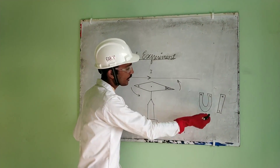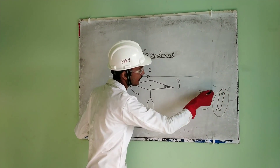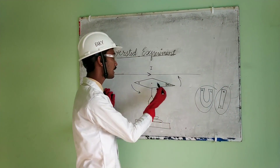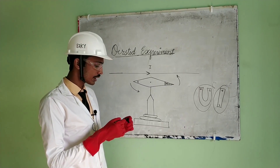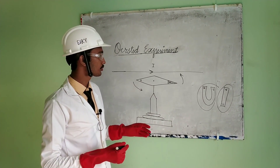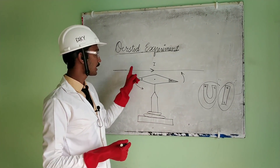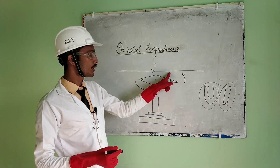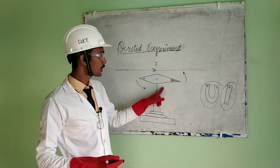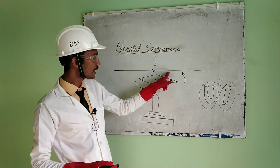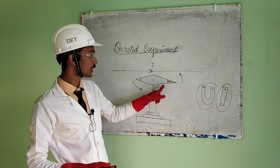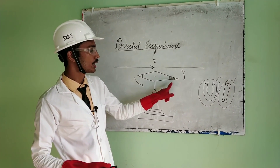You can see this magnet — if you put it in front of the magnetic needle, the magnetic needle deflects. Similarly, the current-carrying conductor is also deflected, which means that the current-carrying conductor produces a magnetic field.